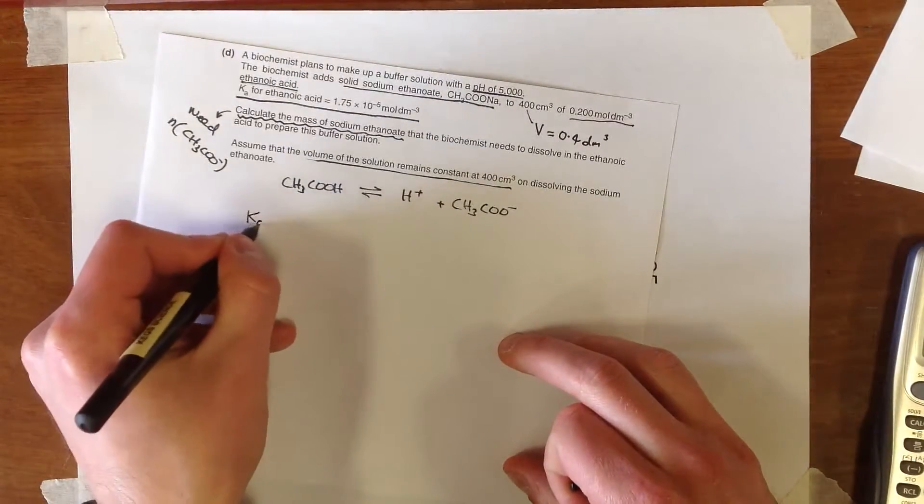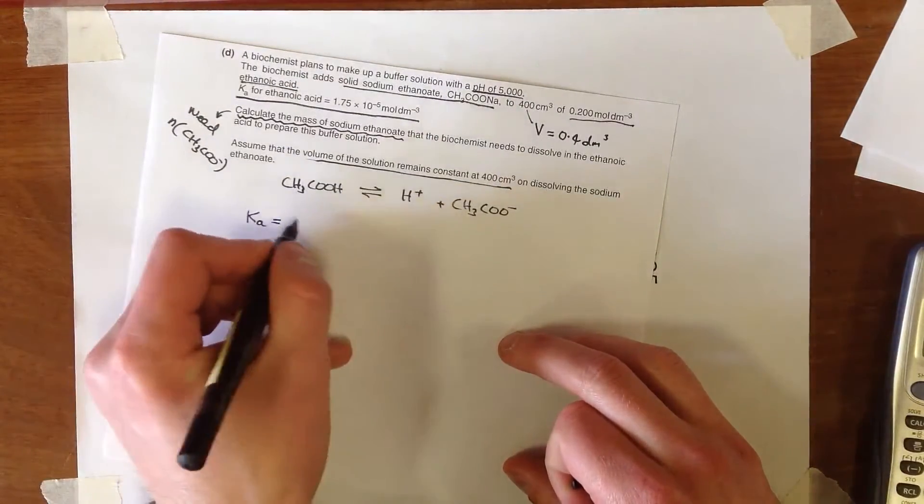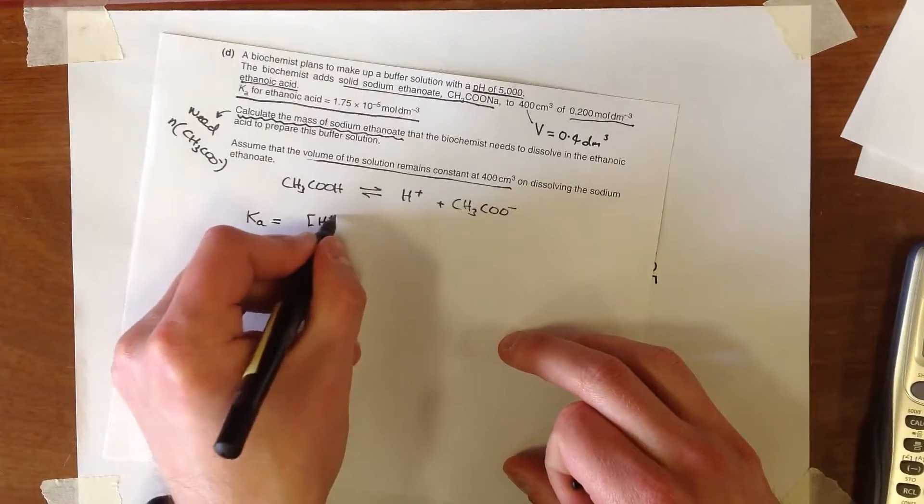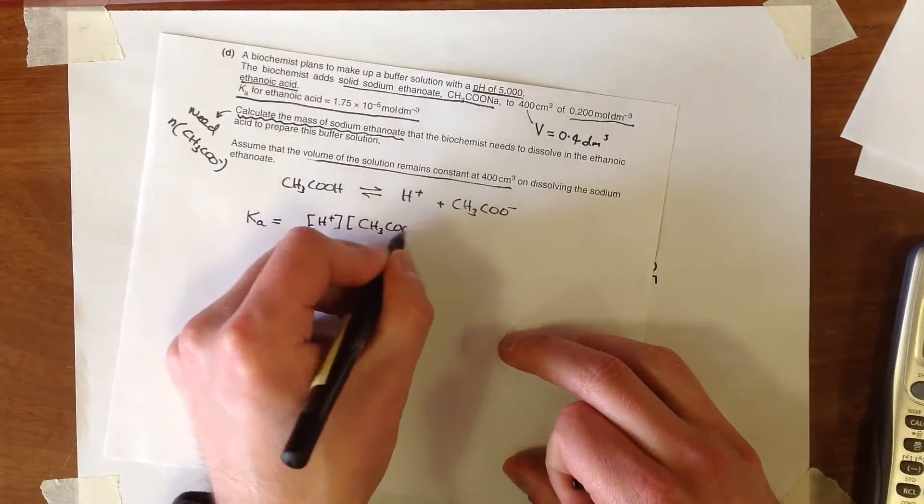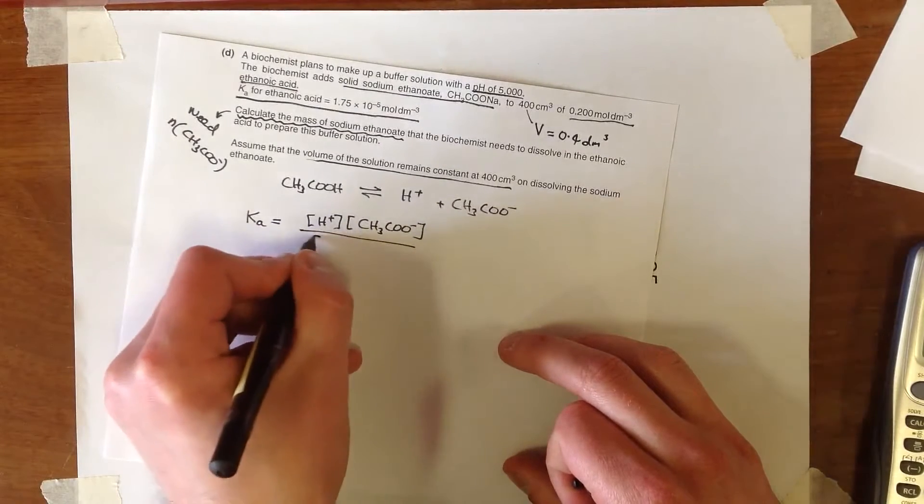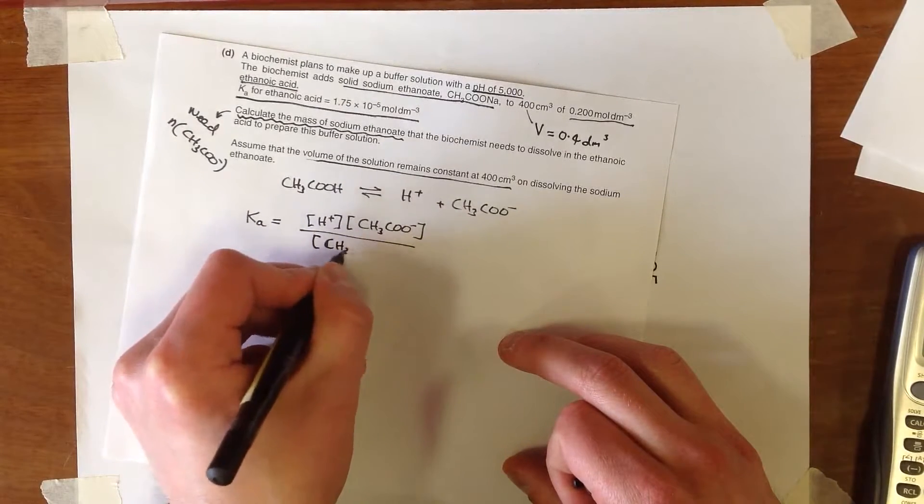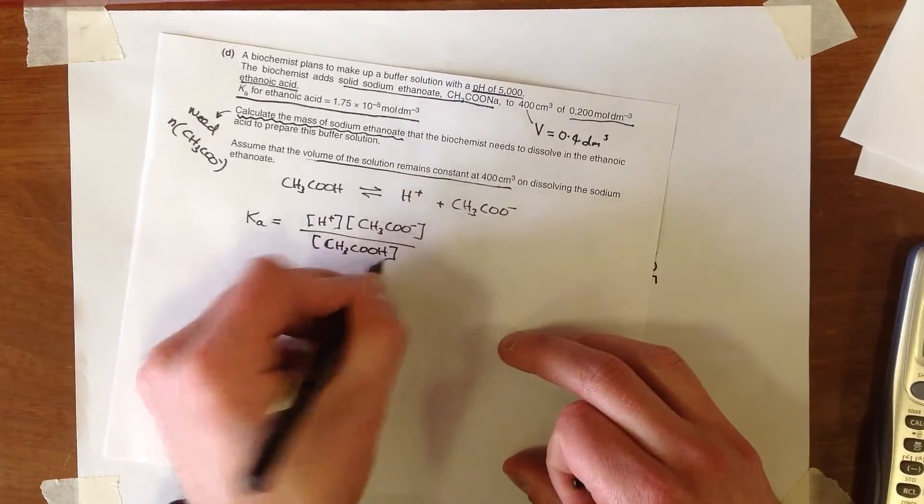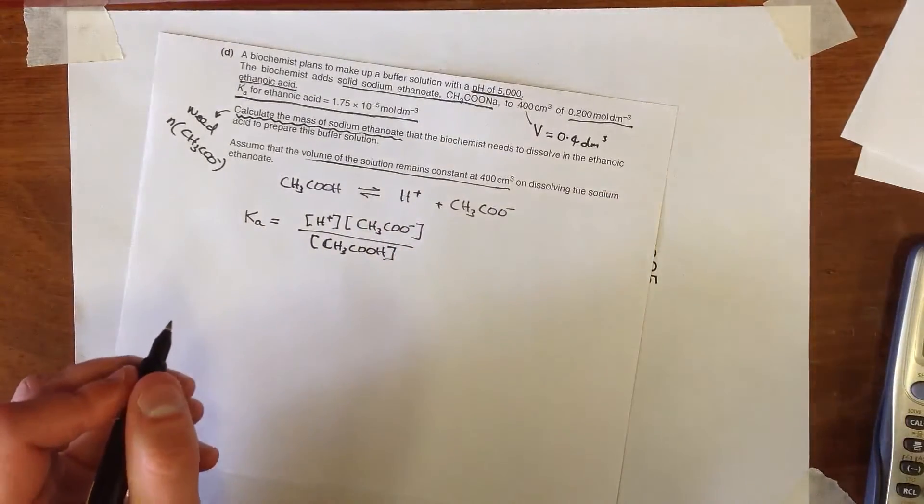And so we can write the Ka for this ethanoic acid as just being [H+][CH3COO-] over the undissociated acid concentration. Now, we need to be really, really careful now when we're using this equation.